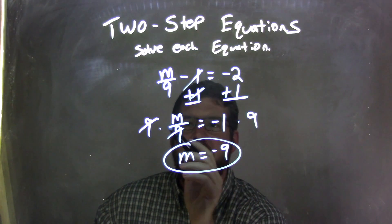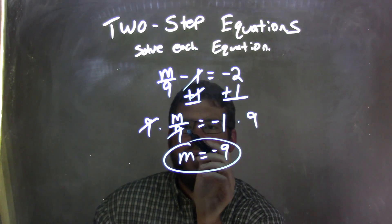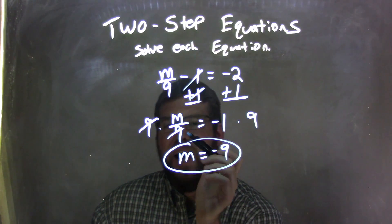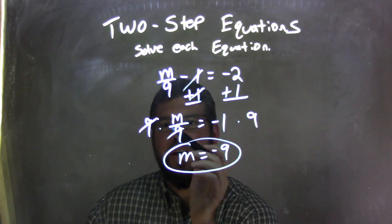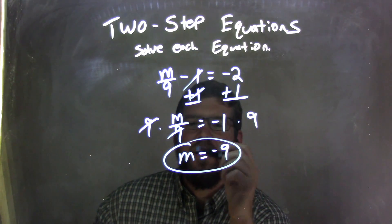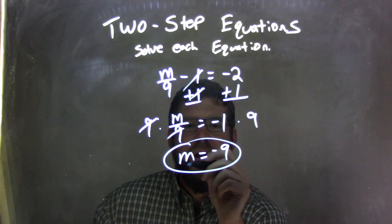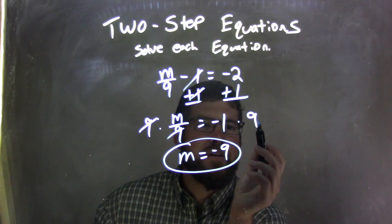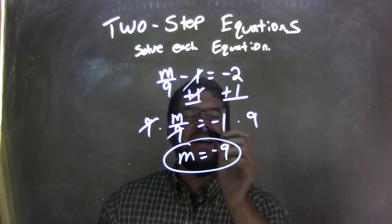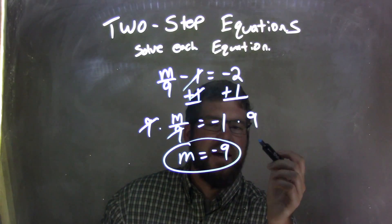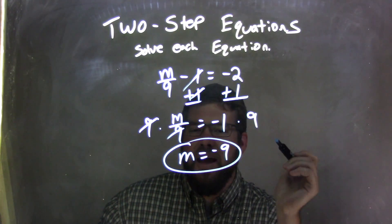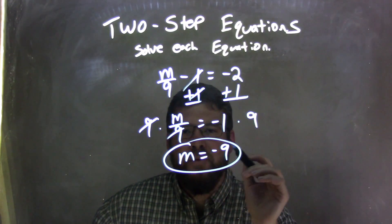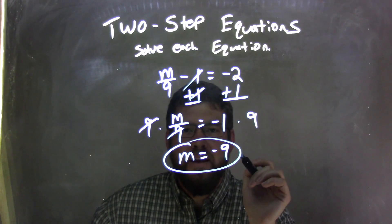So we're left with m over 9 equals negative 2 plus 1, which is negative 1. I then saw that it was division here — m divided by 9 — so the opposite of that is multiplication. Multiply 9 to both sides. A negative times a positive is a negative, so m equals negative 9. That's our final answer.